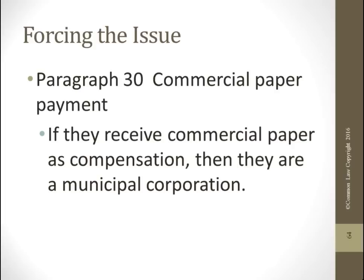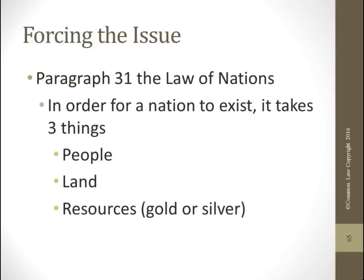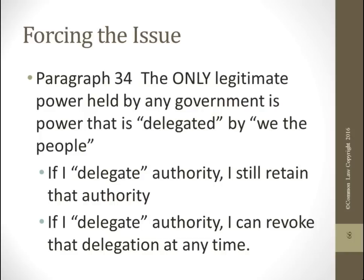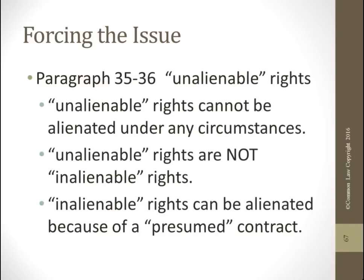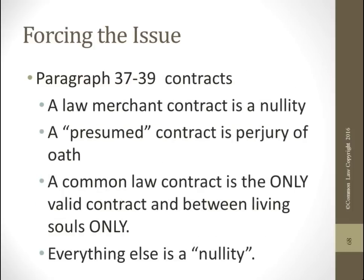Paragraph 30: if they receive commercial paper compensation, then they're a municipal corporation. The law of nations: in order for a nation to exist, it takes three things — people, land, and resources — and I say I'm a nation. The only legitimate power held by any government is power delegated by we the people. If I delegate authority, I still retain it and can revoke that delegation at any time. Inalienable rights can be alienated by one of their so-called contracts. A law merchant contract is a nullity. A presumed contract is perjury of oath. A common law contract is the only valid contract between living souls.